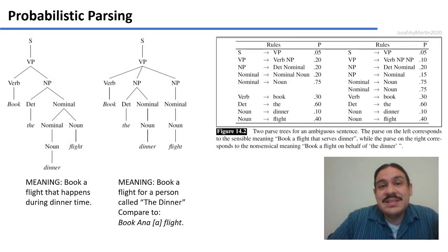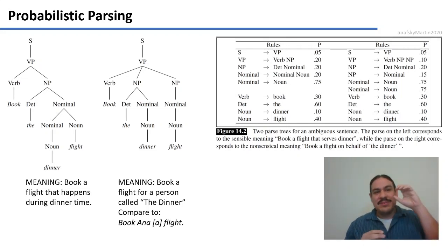And again, you would calculate these numbers by having a very large collection of parses and then figuring out, okay, when I have the rule sentence, how often do I go noun phrase, verb phrase, and how often do I go just verb phrase?